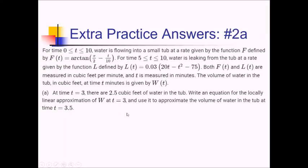For this calculator-based free response problem, for times 0 to 10 we have water flowing into a small tub. The rate of water flowing in is given by function F, defined as an arctan function. For times 5 to 10, water starts leaking at a rate given by function L. Both are measured in cubic feet per minute, t in minutes. Volume at any time is W of t.